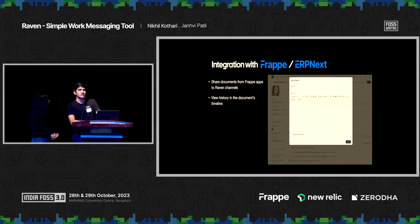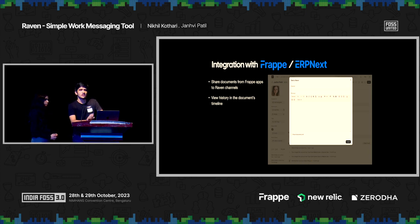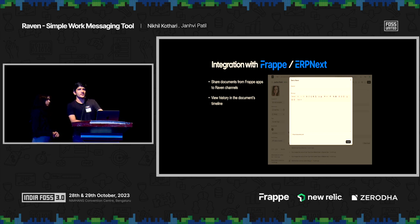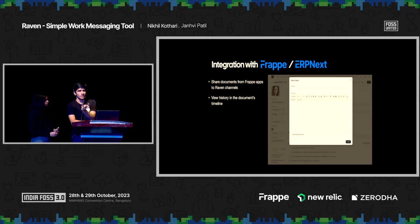We are working on an integration with Frappe and ERPNext. This is one of the most requested features from the community — that users should be able to link a document to a message and share documents from ERPNext to Raven. This is a proof of concept: if you have a document in ERPNext, say a purchase order, instead of 'send email' you would now also get a button called 'Send a Raven.' You click that and you can share the document directly to Raven.